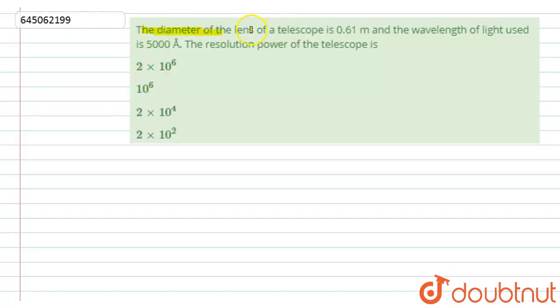The diameter of the lens of telescope is 0.61 meter and the wavelength of light used is 5000 angstrom. The resolution power of the telescope is... So let's see the solution. Actually, in this question we have to find the resolution power of the telescope.